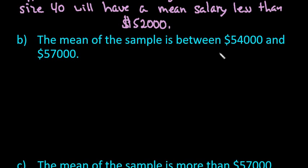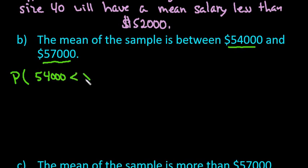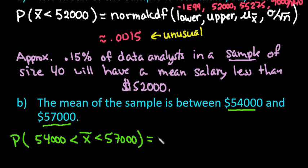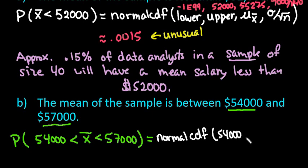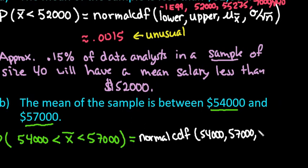For this one, they say the mean of the sample is between $54,000 and $57,000. We're looking for the probability that our sample mean is greater than 54,000 but less than 57,000. For a between scenario in normal CDF, the lower value is 54,000, the upper is 57,000, the mean is 55,275, and then plug in 7,000 divided by the square root of 40.